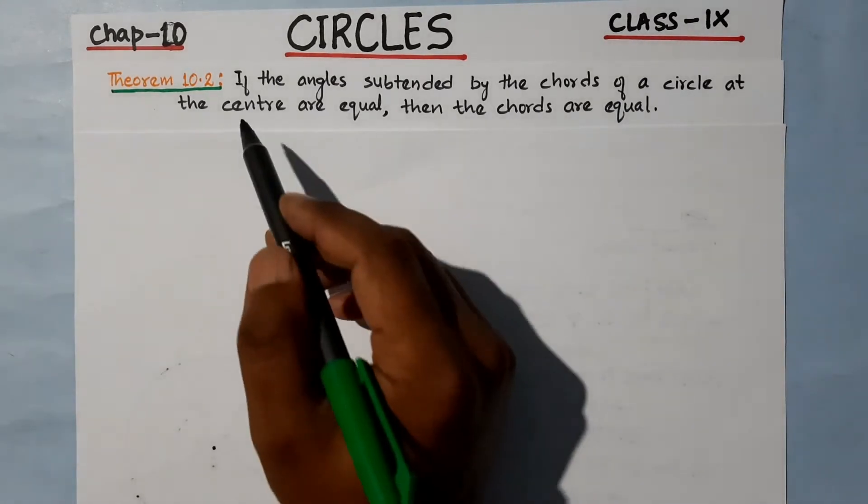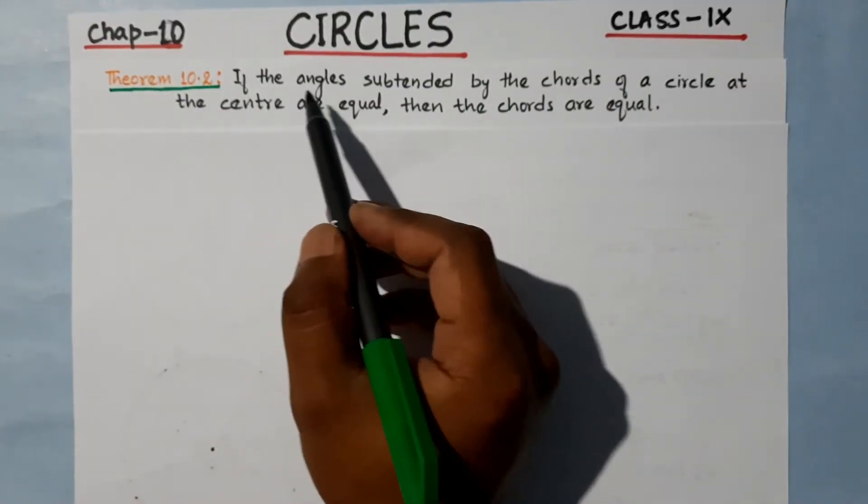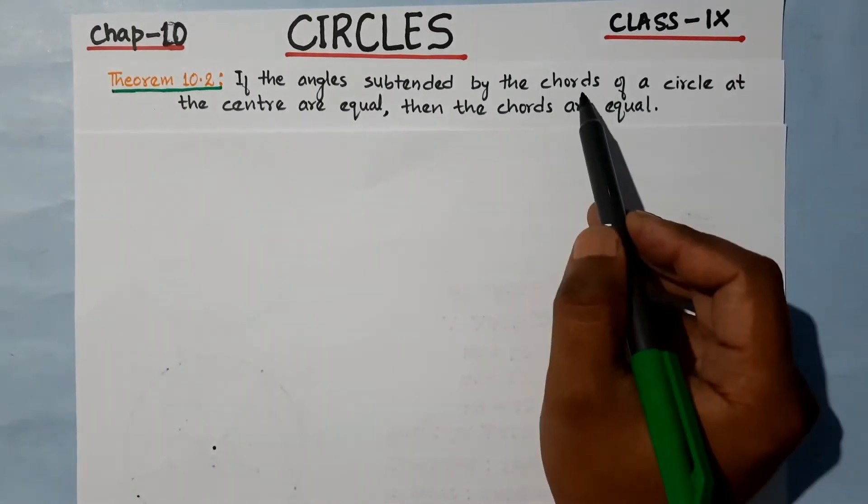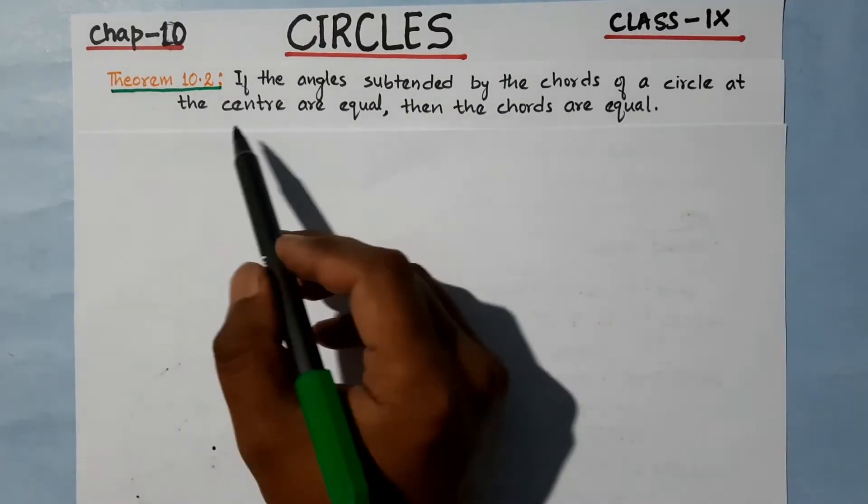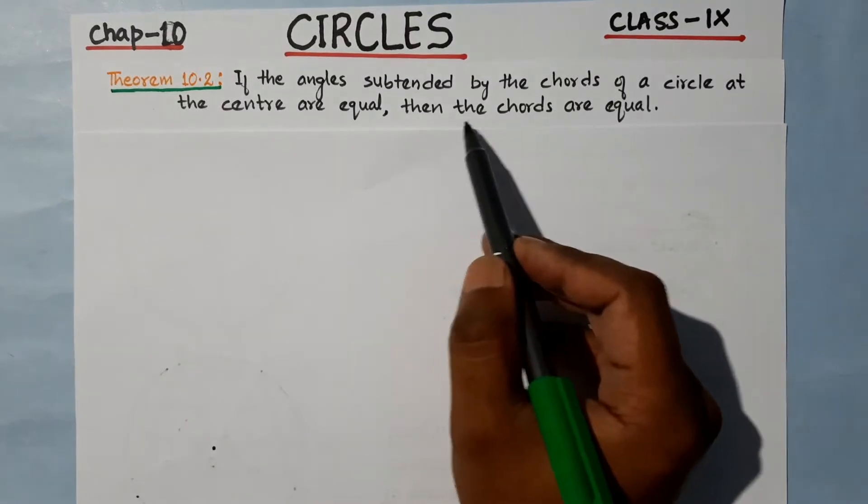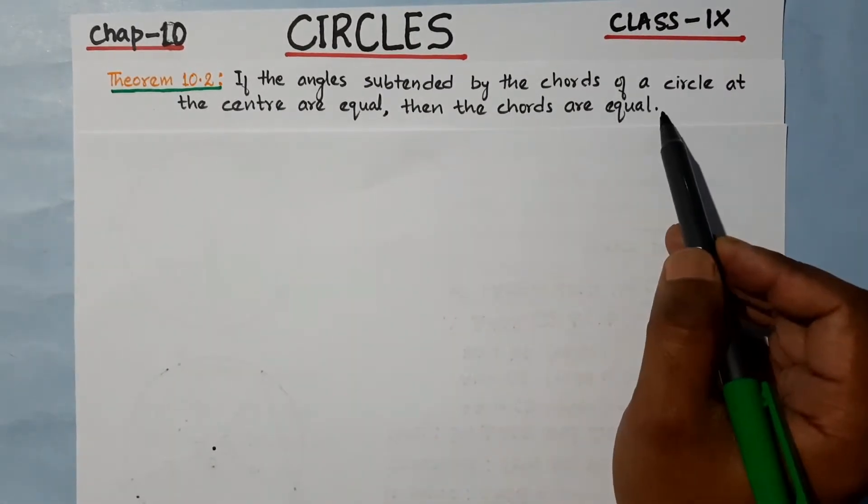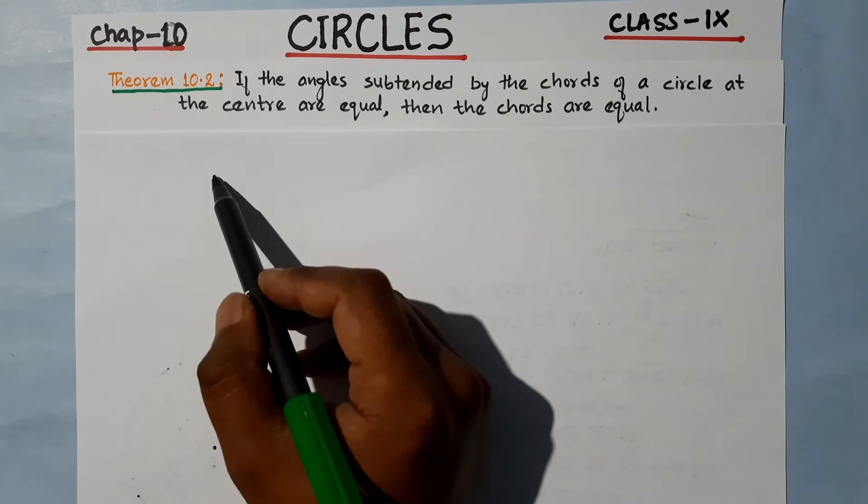Theorem 10.2 states: If the angles subtended by the chords of a circle at the center are equal, then the chords are equal.